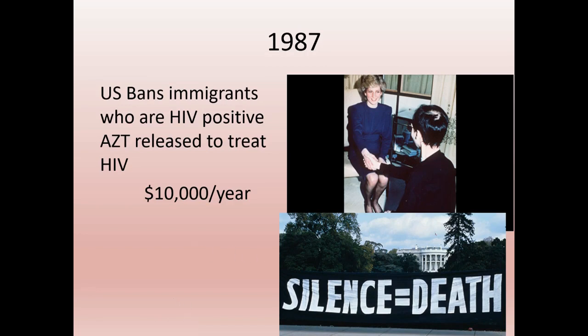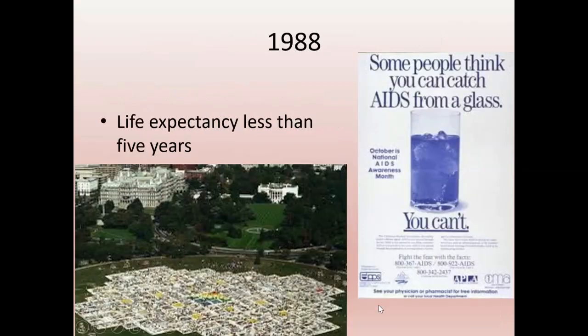The 'Silence = Death' slogan was put in front of the White House, and it's still used when discussing the federal government not responding appropriately during an epidemic. In 1988, life expectancy is less than five years for someone with HIV. People didn't want to find out if they had it because even if they did, they were going to die within five years. The AIDS memorial quilt was displayed in front of the White House — families would make a panel for anyone who died of AIDS. It is currently housed in four separate warehouses in California, and we stopped adding to it because it's now too large.